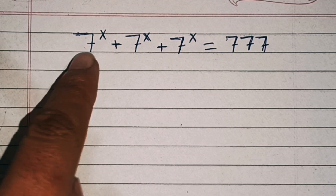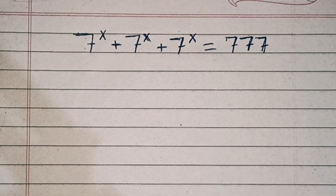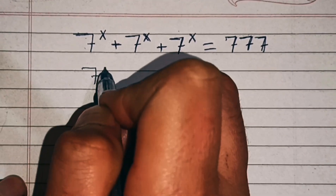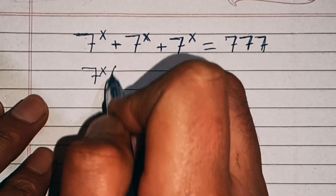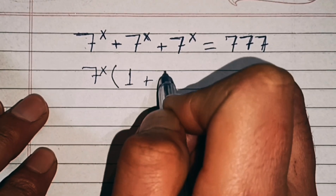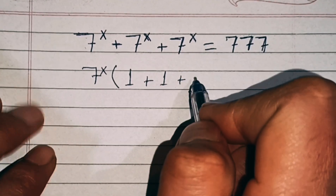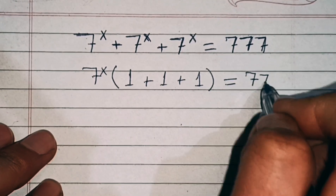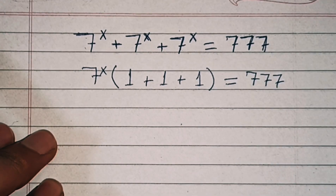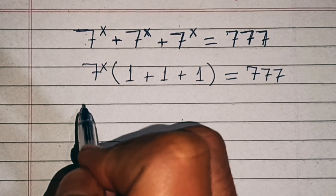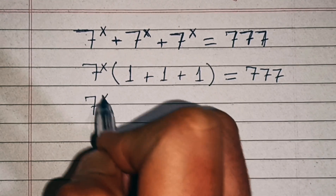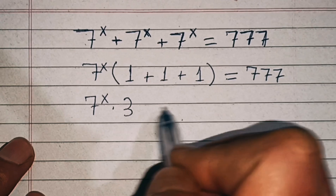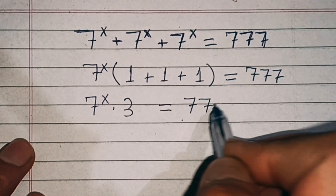From the first step, we can take 7^x common from the left hand side, so we can write: 7 power x times bracket 1 plus 1 plus 1 end bracket equals 777. In the next step, 1 plus 1 plus 1 equals 3, so we have 7 power x times 3 equals 777.